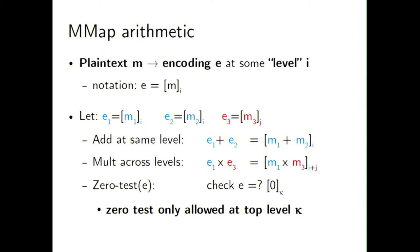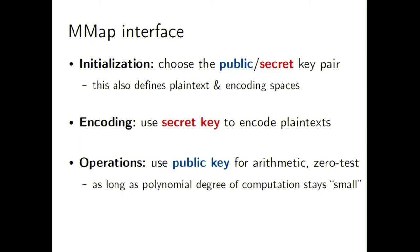You can define more complex level structures, but for this talk I'll focus on levels one through K. All multilinear map candidates share a common interface with three parts. First, initialization: you choose a public and secret key pair, which also defines the plaintext and encoding spaces. Unlike fully homomorphic encryption, encoding uses the secret key to convert plaintext to encodings, while arithmetic operations and the zero test use the public key. Operations are valid as long as the polynomial degree doesn't grow too large — similar to somewhat homomorphic encryption.